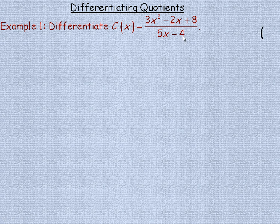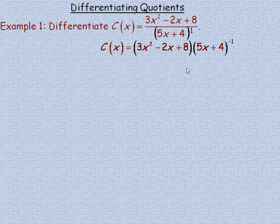We could think of the denominator, the 5x plus 4, as 5x plus 4 to the power of 1, and then rewrite this as a product and use the product rule. So we rewrite it as the numerator function 3x squared minus 2x plus 8 multiplied by 5x plus 4 to the power of negative 1, since moving it from the denominator to the numerator changes the exponent sign from 1 to negative 1.